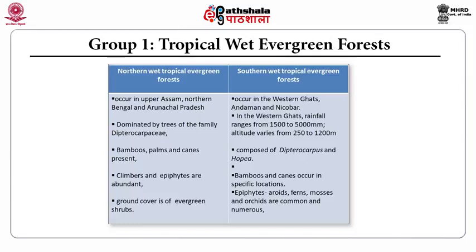In the southern wet evergreen tropical forest, found in Western Ghats and Andaman and Nicobar, the forests are composed of Dipterocarpaceae and Hopea. Bamboos and canes occur in specific locations. Epiphytes are present.